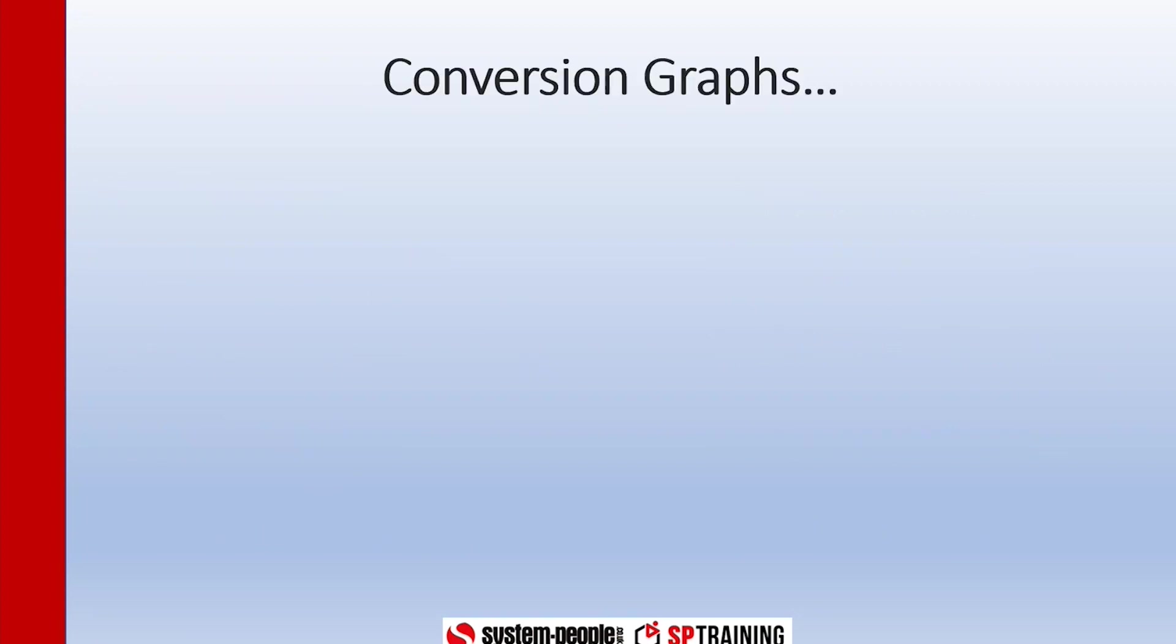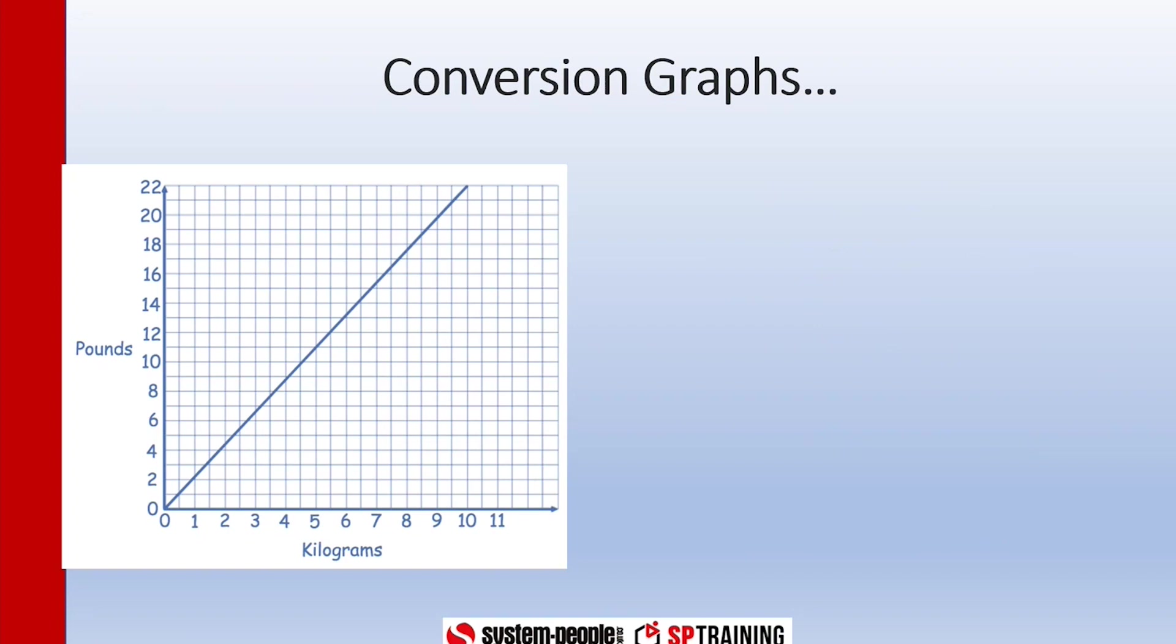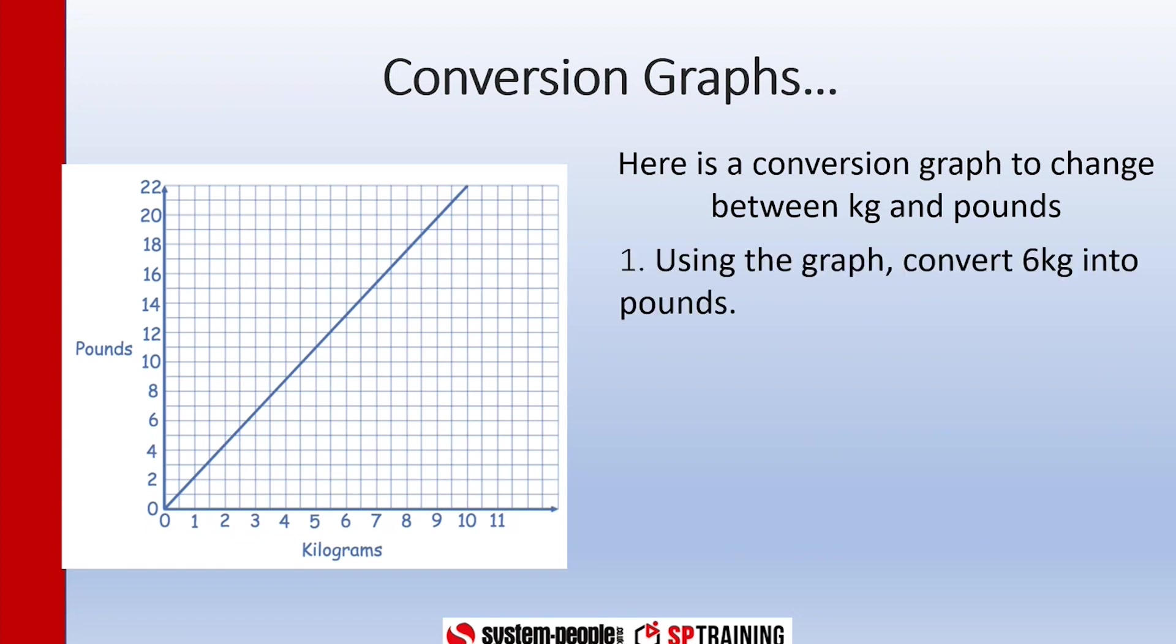The other thing we can use is a conversion graph like this one here. That's converting kilograms into pounds. So along the bottom here it goes up to 11 kilograms, and up the side it goes up to 22 pounds. So we're going to convert between kilograms and pounds using this.